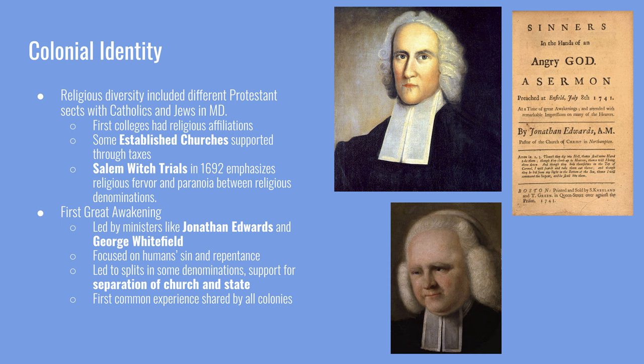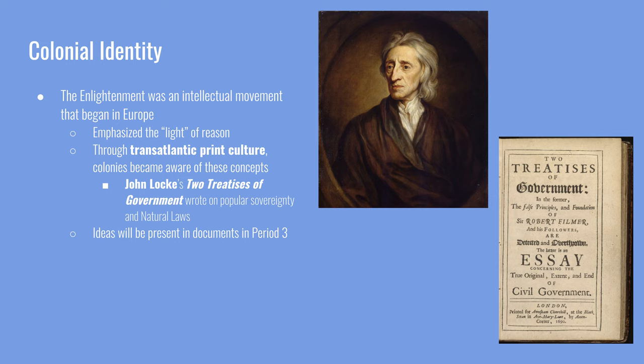Before the Great Awakening, these colonies operated as different separate entities with various identities that didn't always interact with each other. On to the Enlightenment — this was an intellectual movement that began in Europe, but because of the transatlantic print culture, essays printed in England and the rest of Europe were being transported to the colonies. Colonists became aware of the arguments that Enlightenment philosophers were making. One of the most important was John Locke, an English philosopher who wrote the Two Treatises on Government, which focused on self-government and natural law. These ideas resonated profoundly with the Founding Fathers in the next historical period.